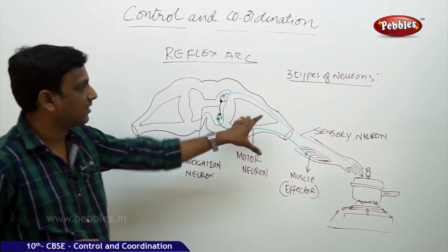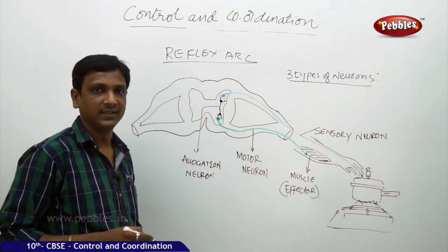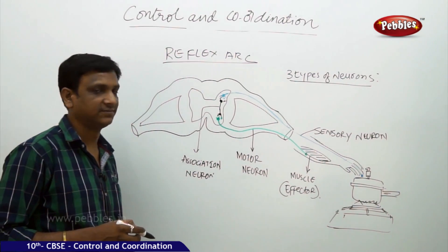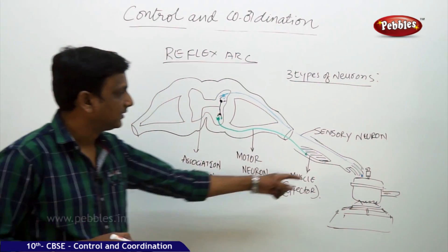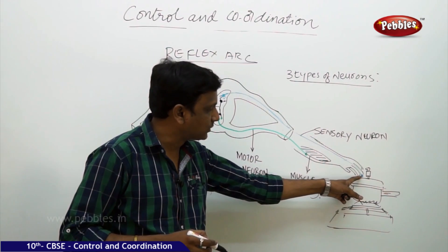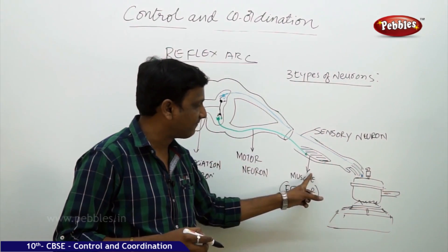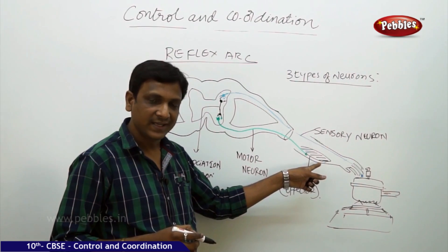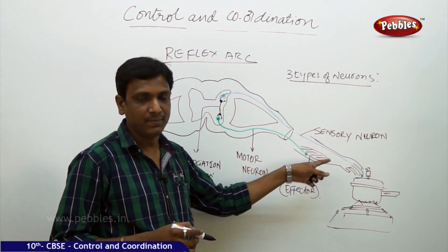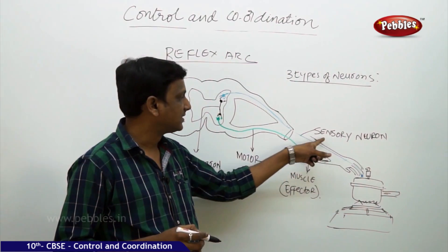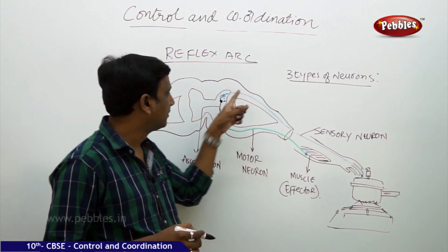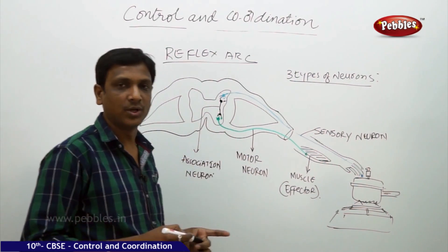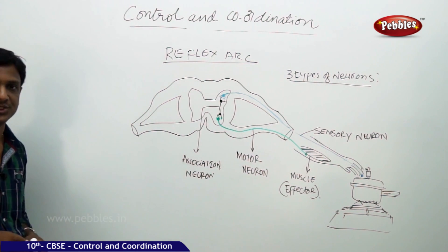These are the various parts involved in a reflex action. A reflex arc consists of three different types of neurons. It also involves one receptor and one effector — the receptor receives the information and the effector creates a movement. In between the receptor and effector, the sensory neuron, association neuron, and motor neuron execute the reflex action.